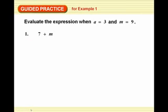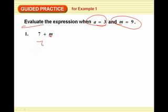So you've got guided practice, for example one which you're also writing with me. 7 plus m. Now notice up here it says, this is the instructions for the whole thing. Right here, it says to evaluate. There's the options: a is 3, and m is 9, so we'll use whatever letters we need to. So we have 7 plus m, in this case we look up there, m is worth 9. So we go 7 plus 9, which is 16.